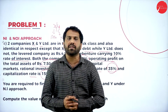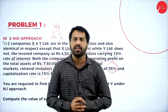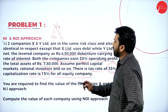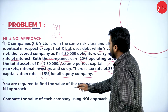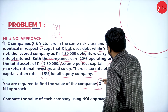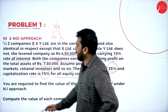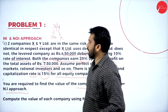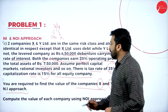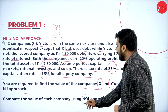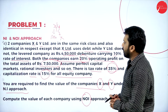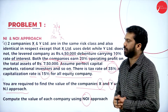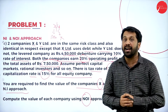We have all the information. We are required to find the value of companies X and Y under the NI approach — Net Income approach — and then compute the value of each company using the NOI approach. First, we need to find the net income.